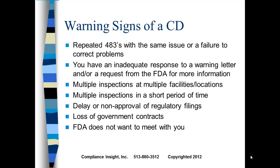The warning signs of a consent decree coming your way: repeat 483 observations are a major indicator. If you don't fix the problem and the FDA keeps finding it, they are going to start issuing warning letters. If you still don't fix it, they will hammer you with a consent decree. An inadequate response to a warning letter or an FDA request for more information is another warning sign. Multiple simultaneous inspections at multiple facilities and locations is a real key warning sign that a consent decree may be coming.